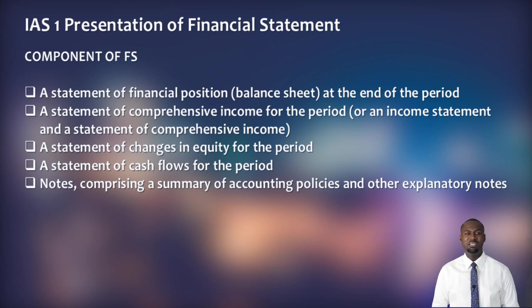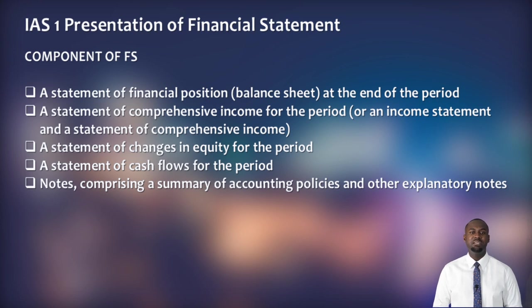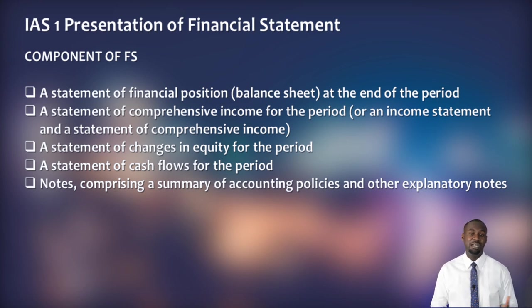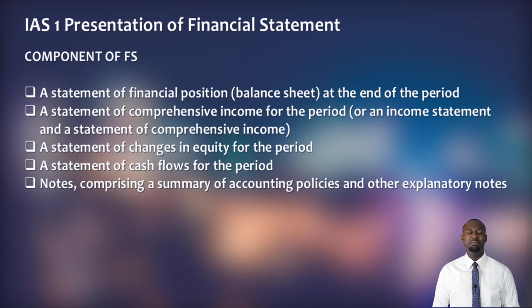For any general purpose financial statement you may see, it must have all five components: the statement of financial position (usually called the balance sheet), the statement of profit and loss and other comprehensive income, the statement of changes in equity (which helps us understand contributions to and from owners), the statement of cash flows (telling us the cash position of the entity), and the notes to the financial statement giving details of accounting policies and other explanatory notes relevant to making a meaningful understanding of the financial statement.